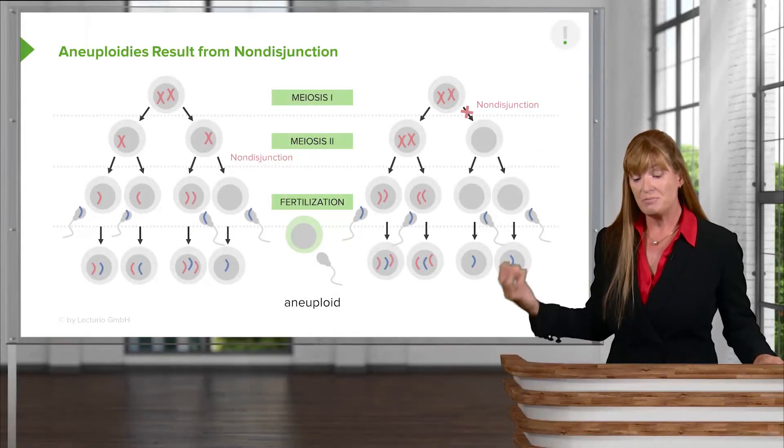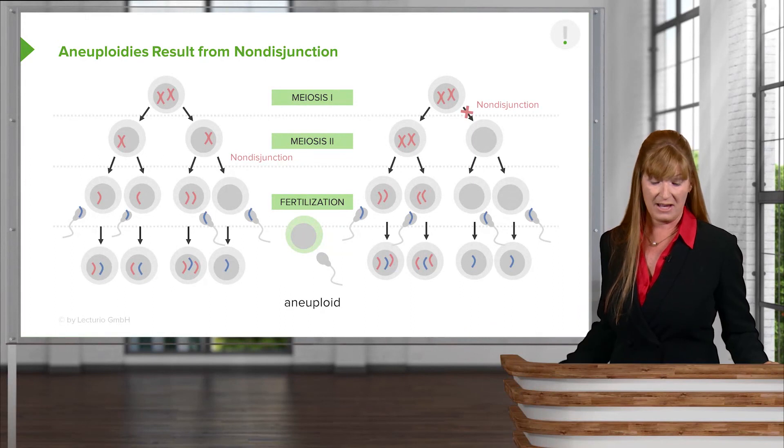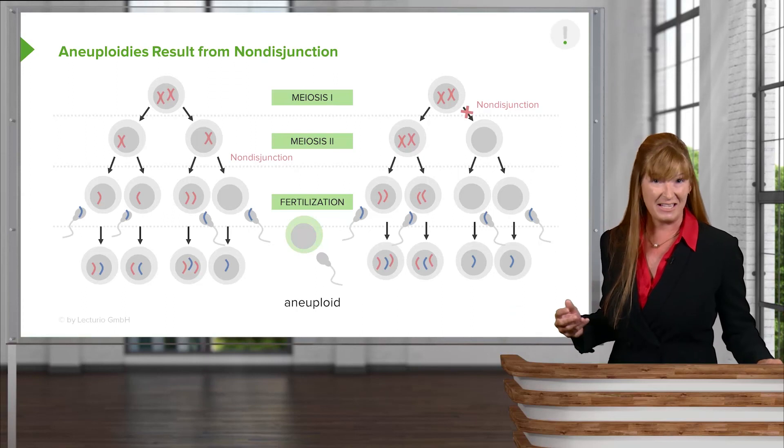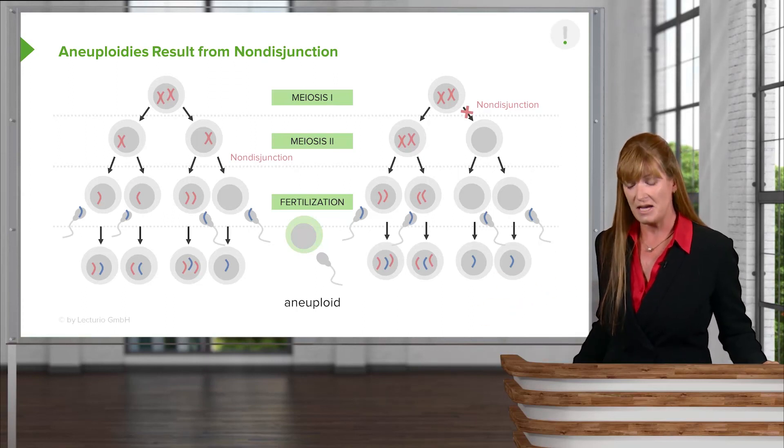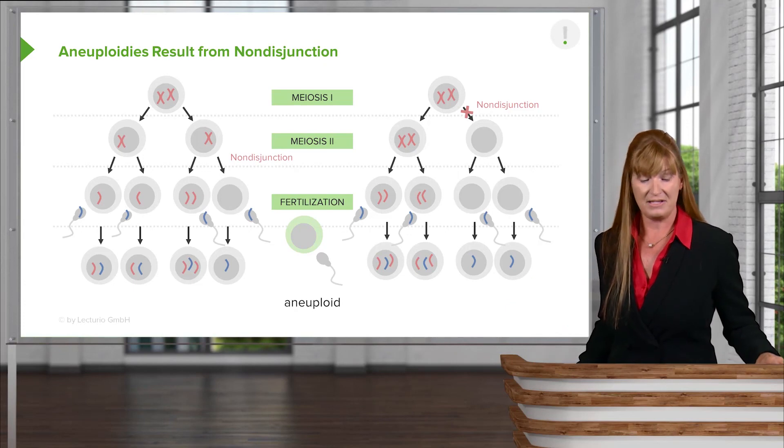And so spermatocytes are developed throughout man's life. And so non-disjunction is a less likely event. That's just one of the hypotheses. There are other ones, but that's one of the leading hypotheses in that area.